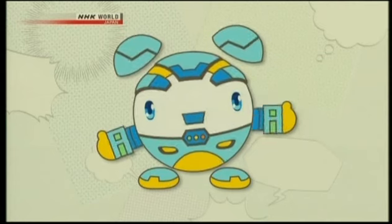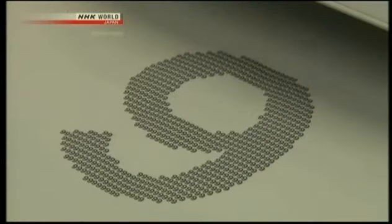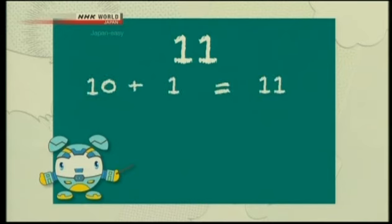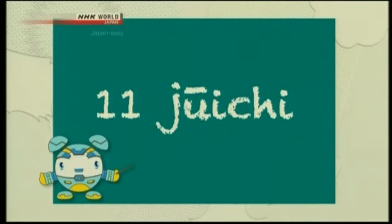Do you remember how to count from 1 to 10? Today we'll learn how to count from 11 to 99. In Japanese, the rule for counting those numbers is really easy. Let's take 11 as an example — if you write it as a numerical formula, it becomes 10 plus 1 equals 11. To say 11 in Japanese, simply read the numbers in the formula: 10 is じゅう and 1 is いち, so 11 is じゅういち.